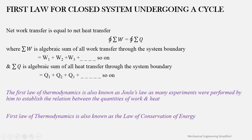This is the expression for the first law for a closed system undergoing a cycle. You already know that in a cycle the initial and final points are the same. The definition of the first law for a closed system undergoing a cycle is that the net work transfer is equal to the net heat transfer within the cycle.